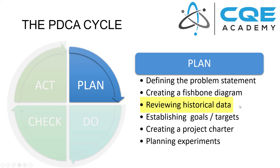Other things you can do in the plan phase include reviewing historical data or establishing targets — what should the yield be, what should process capability or stability be? These are all good opportunities to talk about what you're really trying to achieve. Depending on the scope of your problem, you may want to create a project charter with a timeline and project team to formalize your efforts. And most importantly, you want to plan experiments. If we leave the planning phase with four potential root causes, we should be planning experiments to test those four root causes to either rule them out or confirm them.